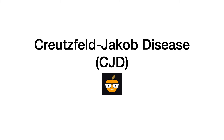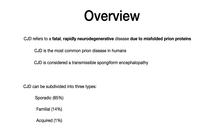Let's learn everything you need to know about Creutzfeldt-Jakob disease. CJD refers to a fatal, rapidly neurodegenerative disease that is due to misfolded prion proteins. CJD is the most common prion disease in humans and is considered a transmissible spongiform encephalopathy.